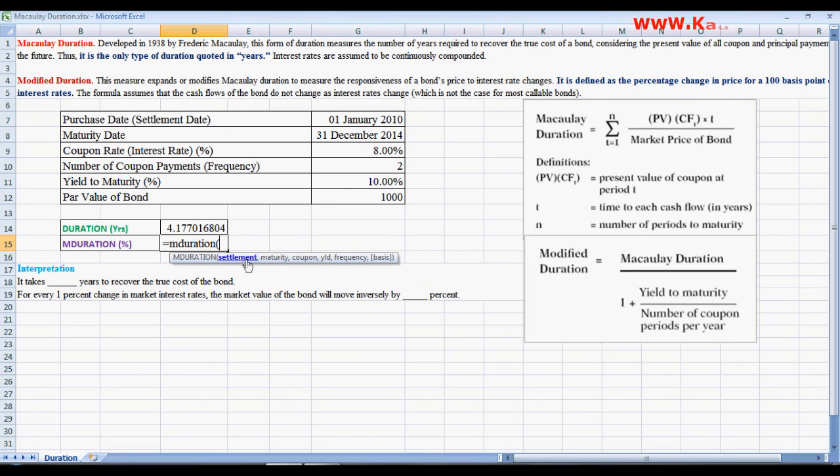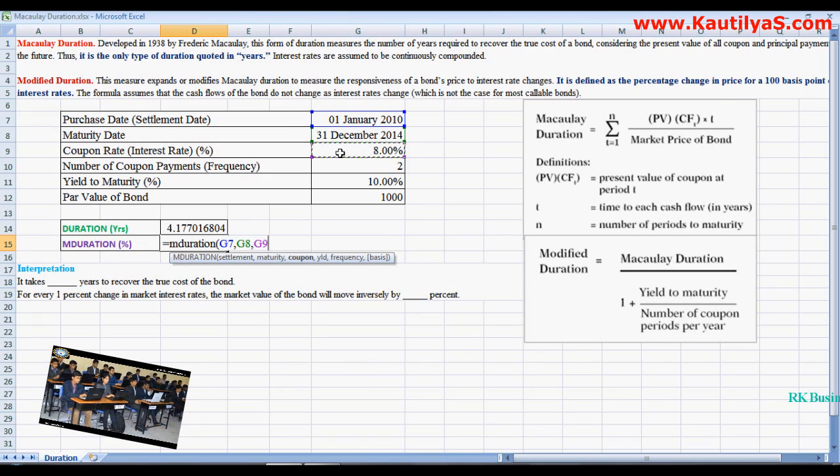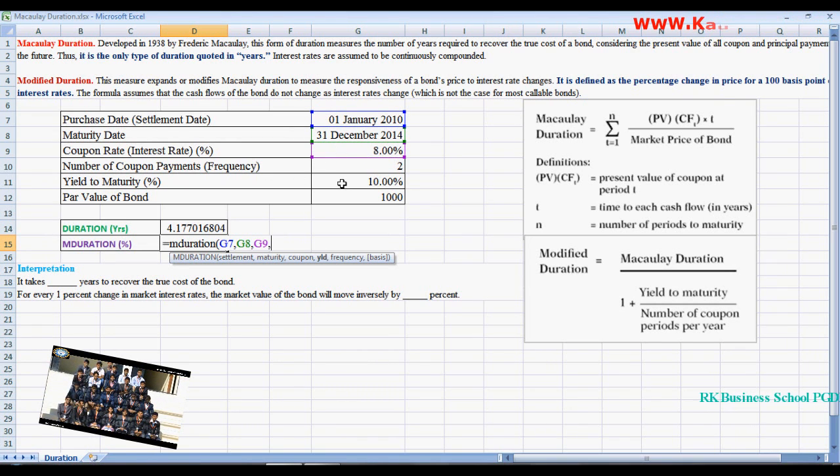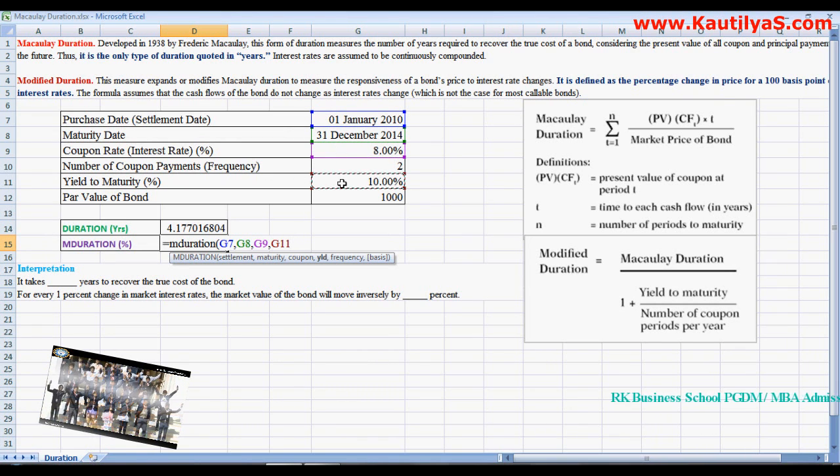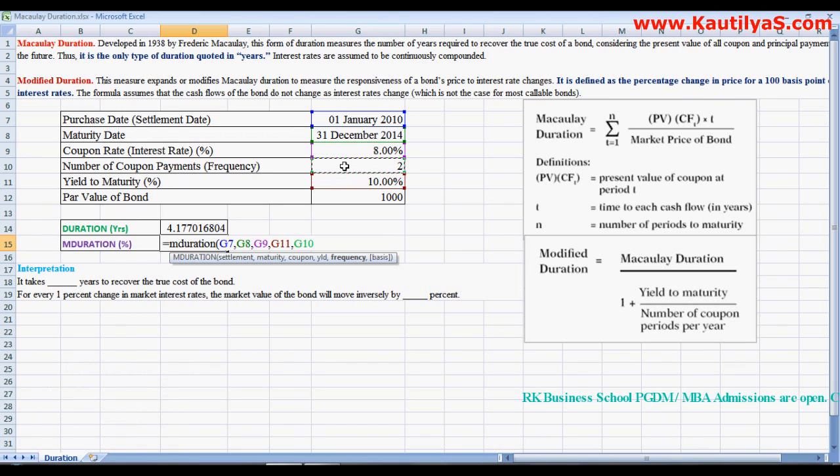Same, we need to select the settlement, your purchase date, comma, maturity date, comma, coupon, comma, yield, select the yield, then put a comma, then frequency, and click enter.